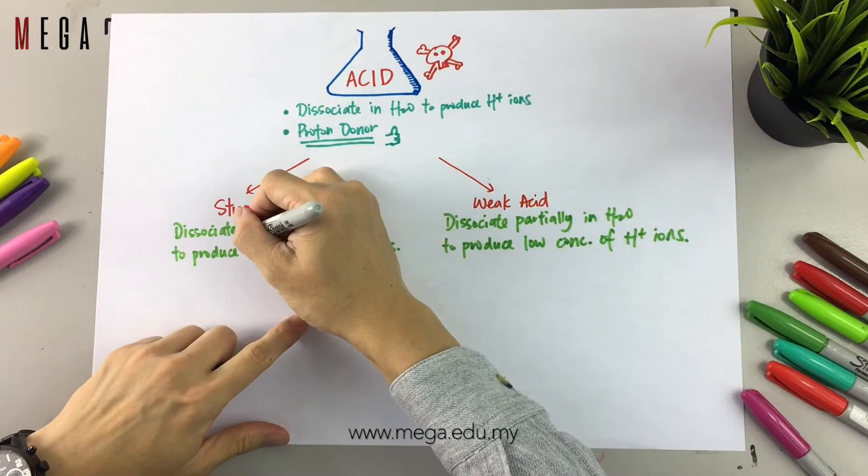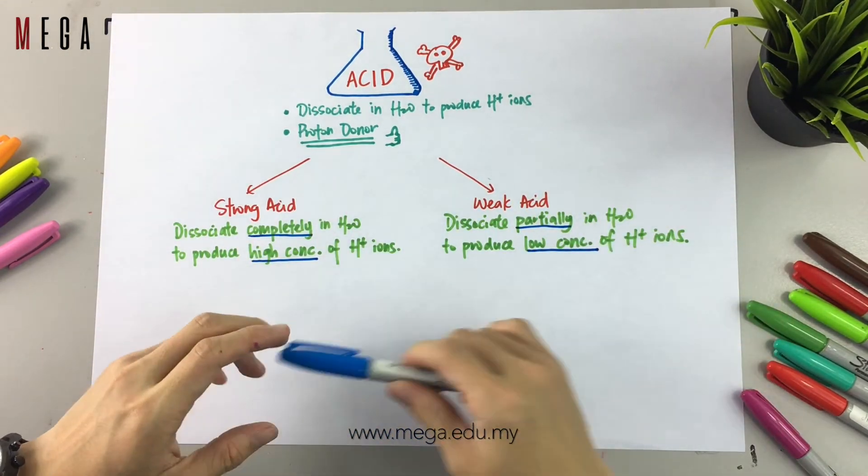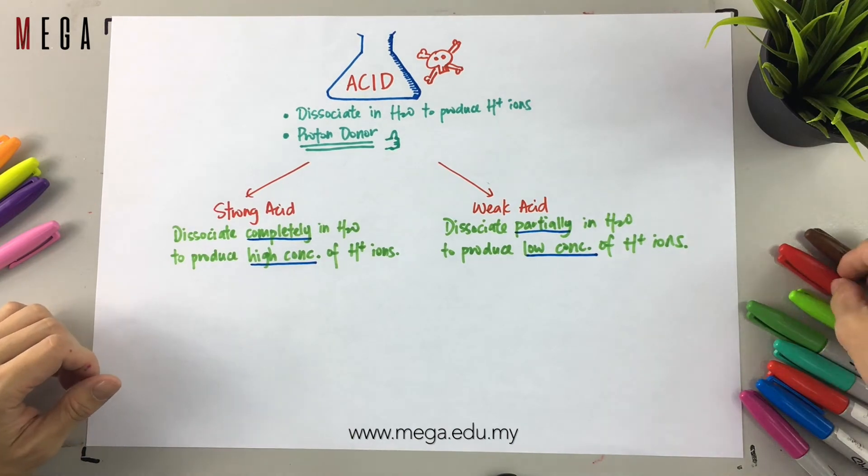Basically, these are the keywords that you need to include in the definitions: the rate of dissociation and also the concentration of hydrogen ions that it produces.